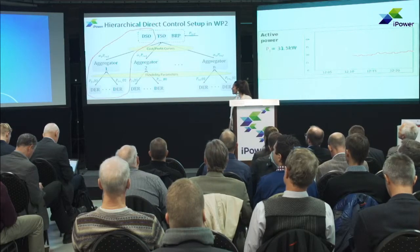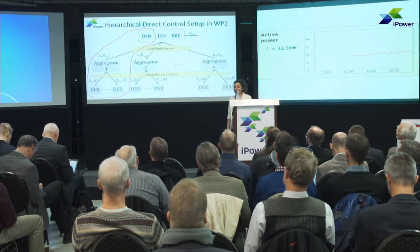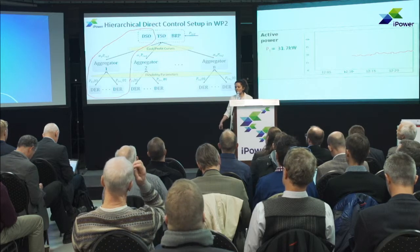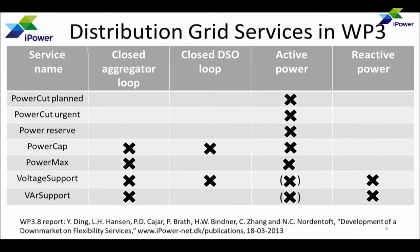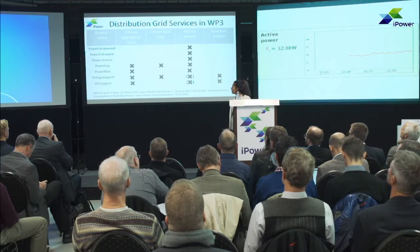The top-level controller runs a one-time optimization to find the optimum value for alpha, which is fixed during the activation time. For our demonstration setup, we just consider one part: one aggregator and two DERs, which are a supermarket refrigeration system and a chiller system connected to an ice tank. We aim to demonstrate one of the DSO services. David already mentioned that in Work Package 3 of iPower, people worked on the definition of services that can be offered from DERs and would be interesting for the DSO.